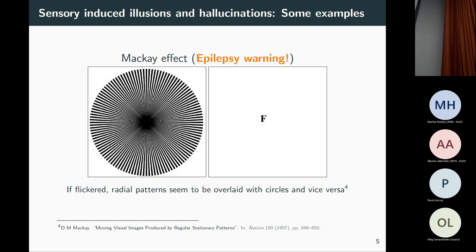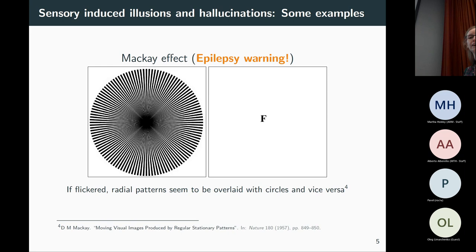This is an instance of what's known as the Mackay effect, where the response — your hallucination pattern — is orthogonal in some way to the image that you're being presented with. It's orthogonal on the retina, but it also corresponds to orthogonal activity in the visual cortex, which we'll see in a minute. This is the kind of thing I'm going to be talking about — this orthogonal response.